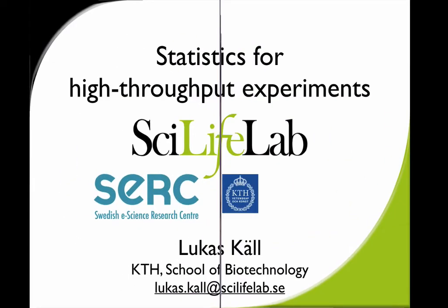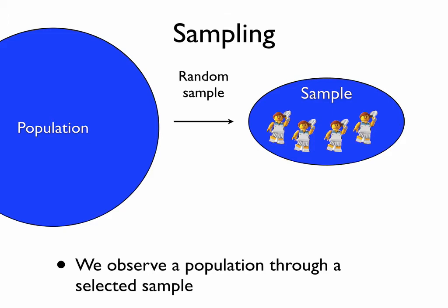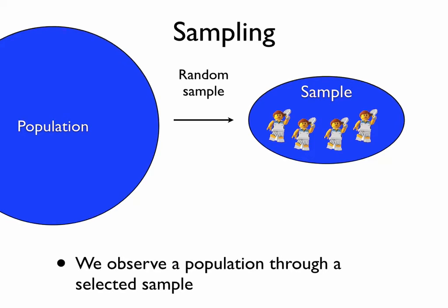Let's start with single readout experiments and the error sources we subject ourselves to. First off, the sampling errors. Most experiments aim at describing a trait or set of traits of a population. The way we do so is by picking a random sample out of the population — the set of individuals we do our experiments on and measure the particular trait we're interested in. When we do so, we subject ourselves to sampling errors. We might have selected too few individuals, or selected them in a biased manner.